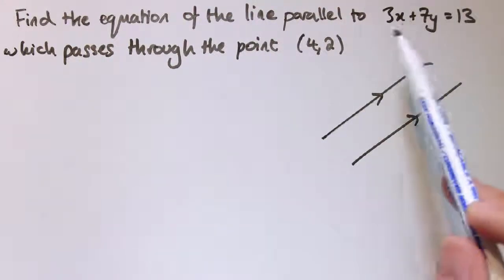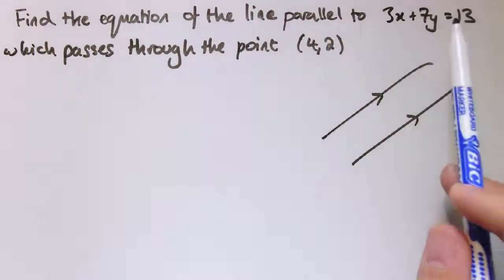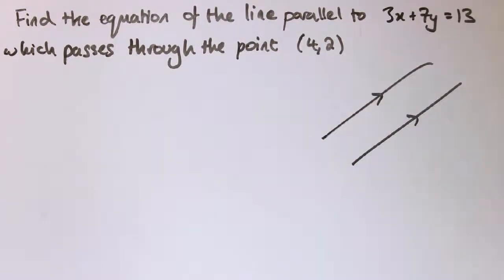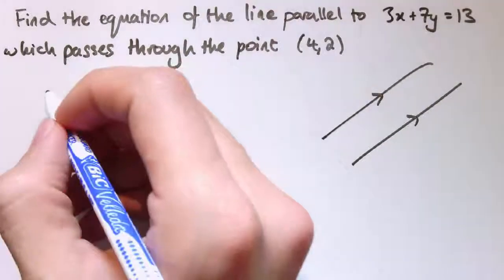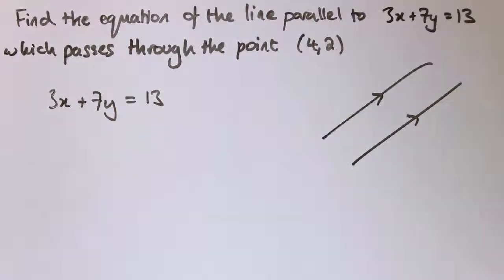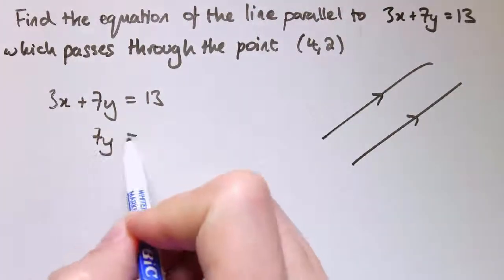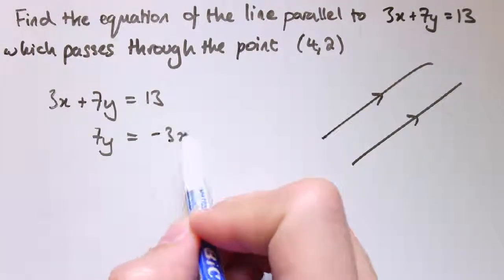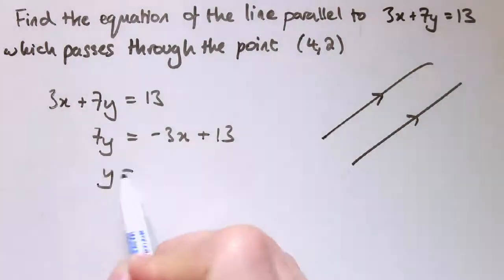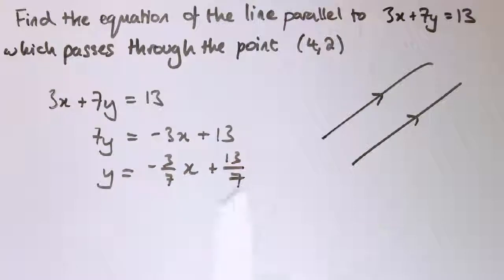They're determining how steep this line is and the 13 is the thing that's going to change as we alter this line and move it up and down the page. If you're stuck with y equals mx plus c and want to see it in that way, we could rearrange this line to 7y equals minus 3x plus 13, so y equals minus 3/7 x plus 13 over 7. You can see the 3 and the 7 here, minus 3/7 x, that's become the gradient, so the 3 and 7 have determined the gradient and the 13 and 7 have determined the y-intercept.